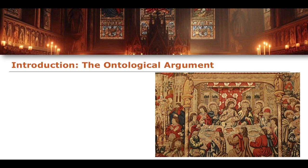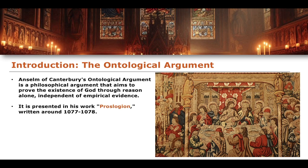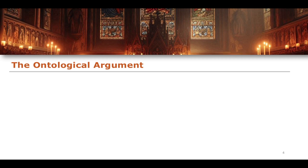The ontological argument is arguably one of the earliest proposed, especially given that Anselm put it forward in a very early part of medieval philosophy. Anselm of Canterbury's ontological argument aims to prove the existence of God through reason alone — a priori — without any reference to empirical evidence. Some arguments for God's existence require looking at the world; this one requires only a basic understanding of premises and logic. It is presented in his work Proslogium, written around 1077 to 1078.